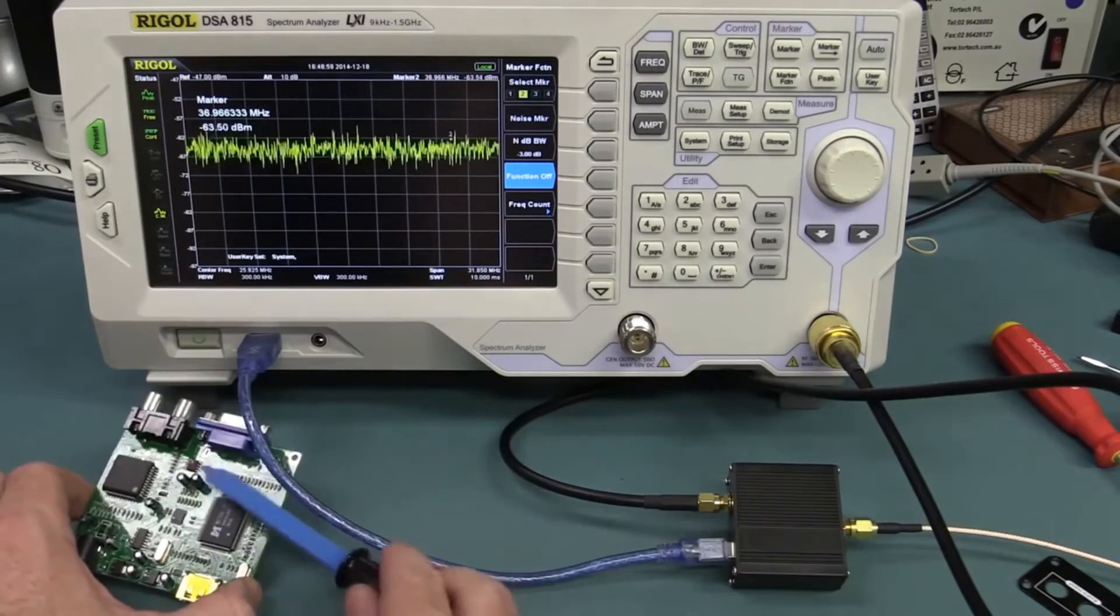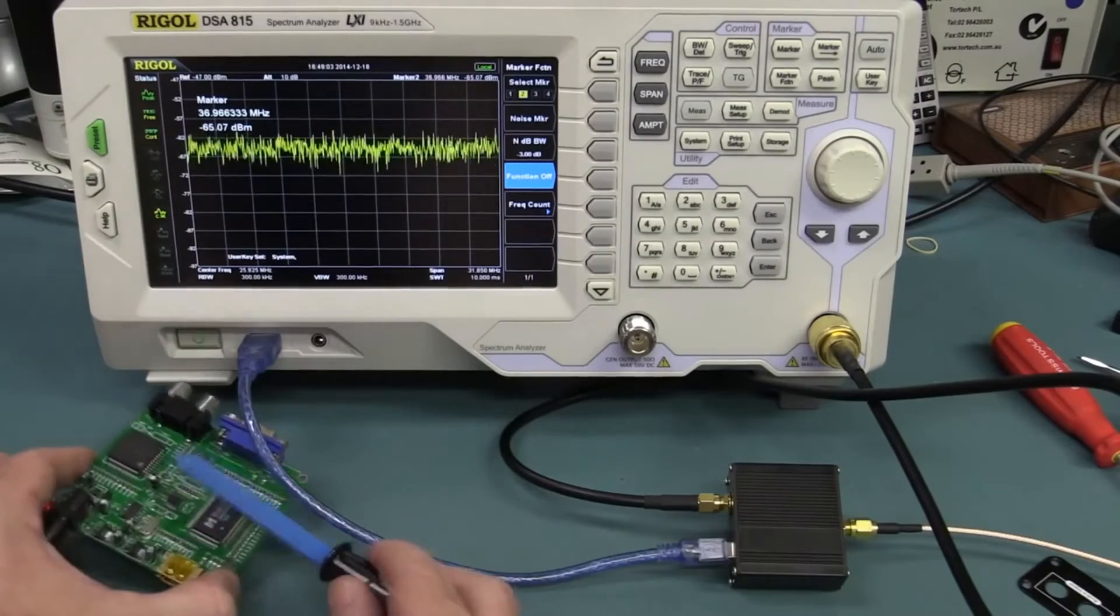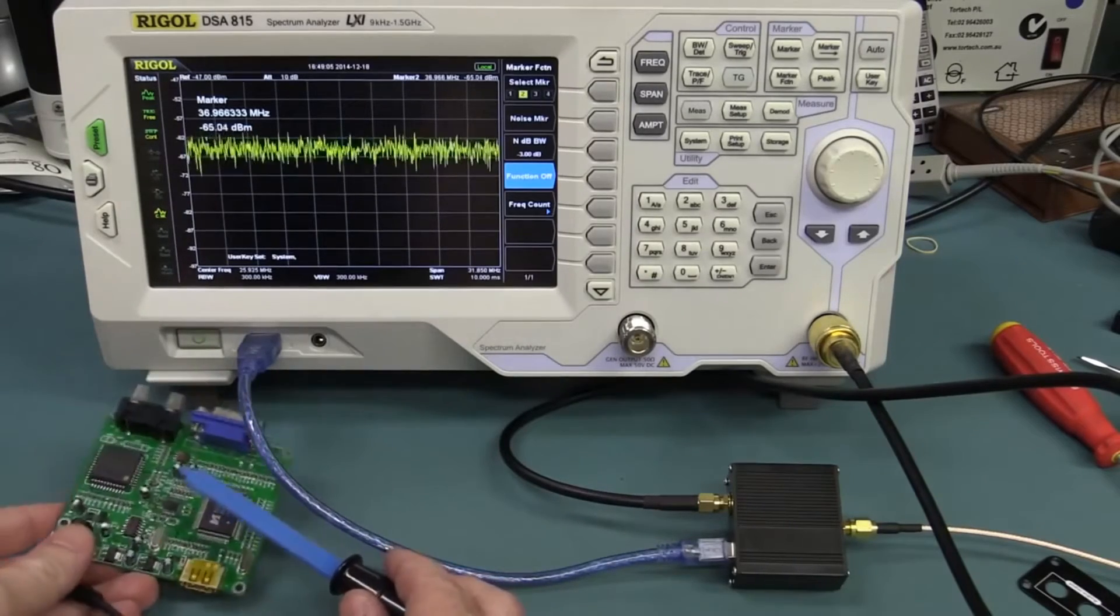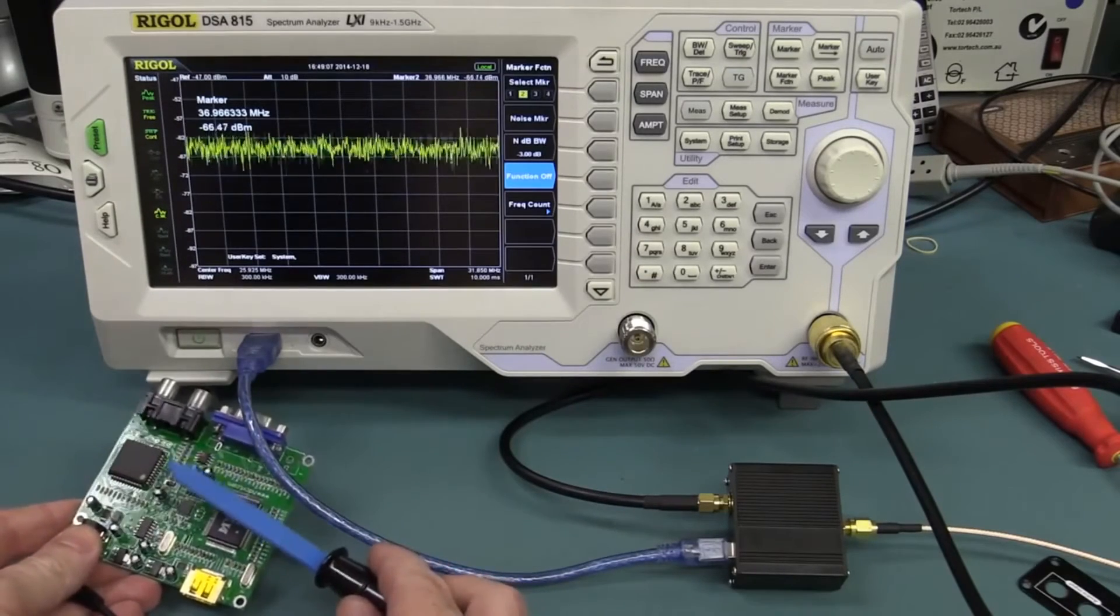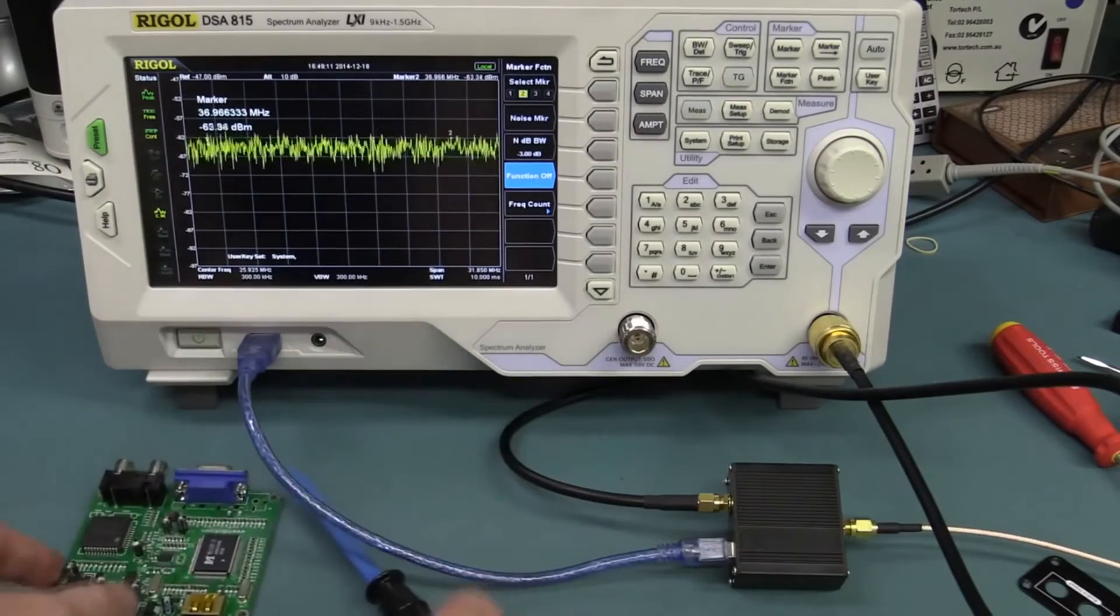And it just lets you do—if you know what the standard is, and you know that you screwed up the layout on this, and it wasn't supposed to emit there, and all that sort of jazz, then you can find this stuff really easily with these sorts of near-field probes.